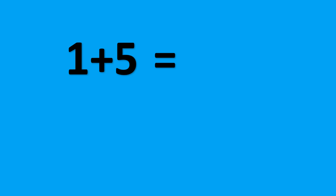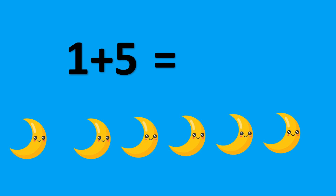1 plus 5. There is 1 moon. Let's add 5 more. Now we have 1 moon plus 5 more. This equals 6 moons. So, 1 plus 5 is 6.